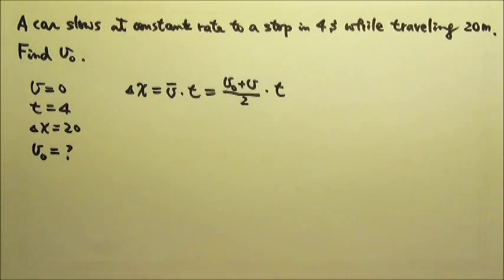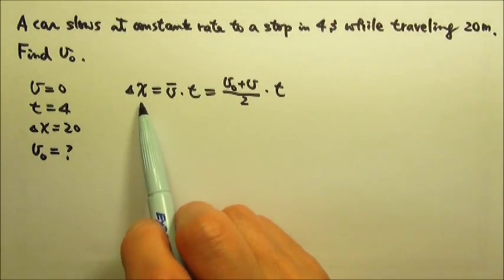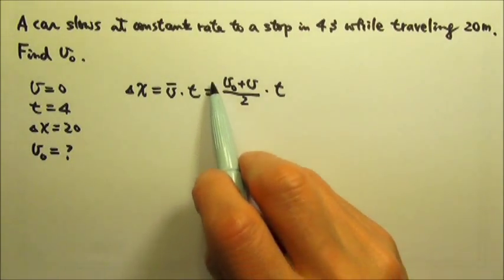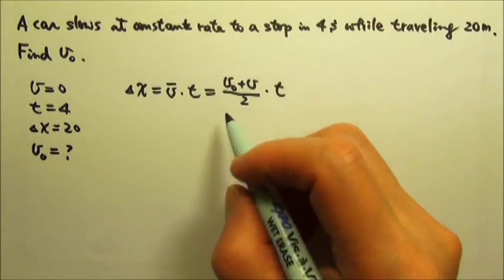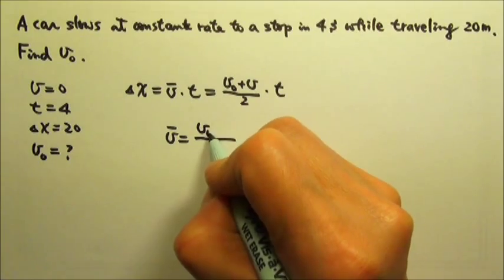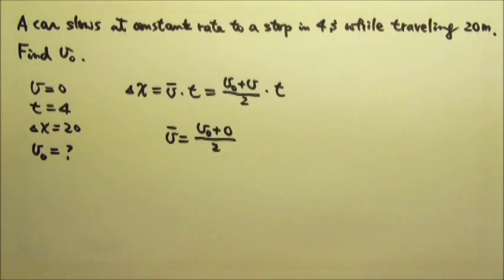So here we can plug in the distance divided by the time so we can have the average velocity. And since the final velocity is zero, it is v0 plus zero divided by two.